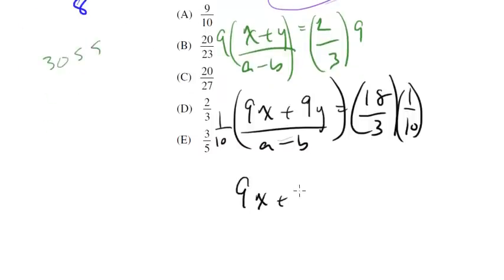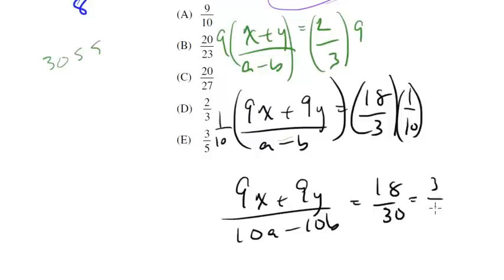So I get (9x+9y)/(10a-10b) is equal to 18/30, and if I reduce that down, I get 3/5.